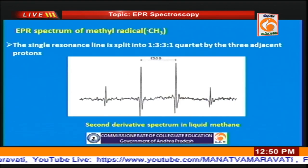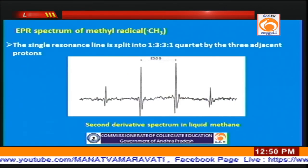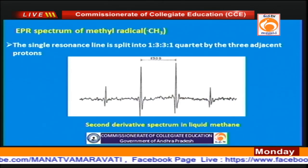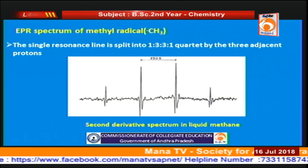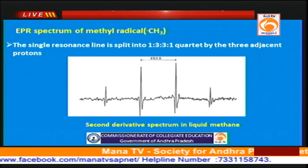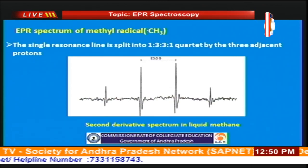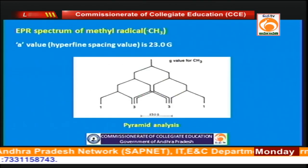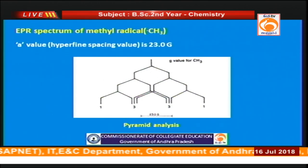This is the ESR spectrum of the methyl radical. In the methyl radical there are three protons surrounding the unpaired electron. Using the formula, we get four lines in the ratio 1:3:3:1, as indicated by Pascal's triangle analysis.